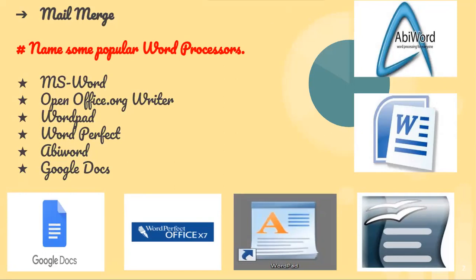What are the different types of word processor software? MS Word, OpenOffice.org Writer, WordPad, WordPerfect, AbiWord, Google Docs. You can see the logo of each word processing software. This is the logo of Google Docs, this is WordPerfect, logo of WordPad, the gray color logo of OpenOffice Writer which is in your syllabus, then MS Word — Microsoft Word — and the top most logo is of AbiWord.